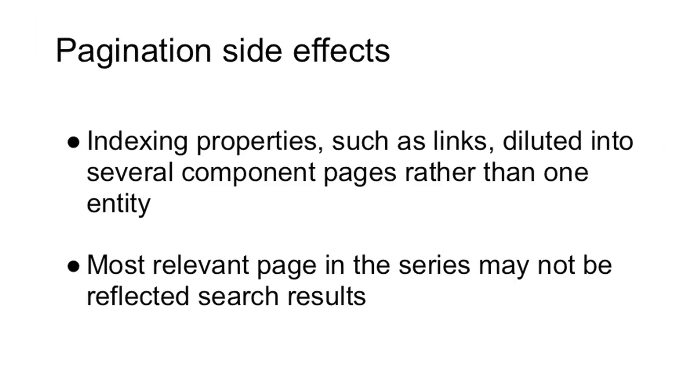What are some of the negative side effects of this? There are a couple I'd like to highlight. The first is that indexing properties like links and anchor text can be diluted into the different component URLs rather than being consolidated to the one article or one product category. The other is that the most relevant page in the series might not be reflected in search results. If you're the webmaster for an e-commerce site, you might want users to be sent to page one, but because search engines see pagination as separate entities, searchers might be sent to a different, less relevant page.